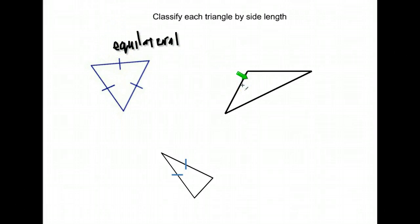Here's our next one. They want it by side length, so we need to know how many of the sides are the same length. Well, none of them are marked as being the same length, so we can't assume that they are. Since none of them are marked the same length, they are none of them the same length. And what type of triangle is that? That's a scalene triangle.